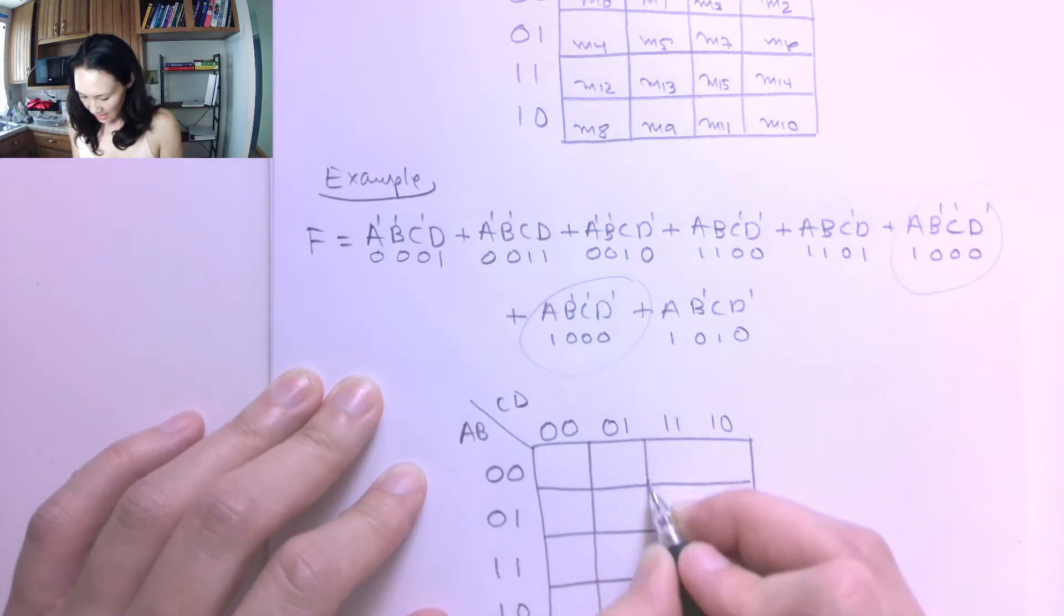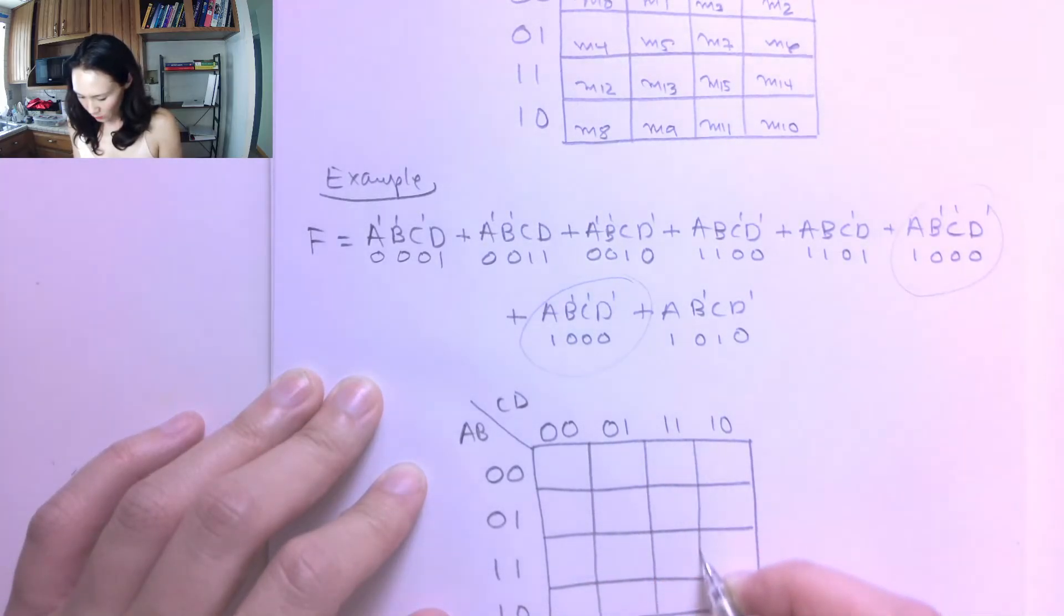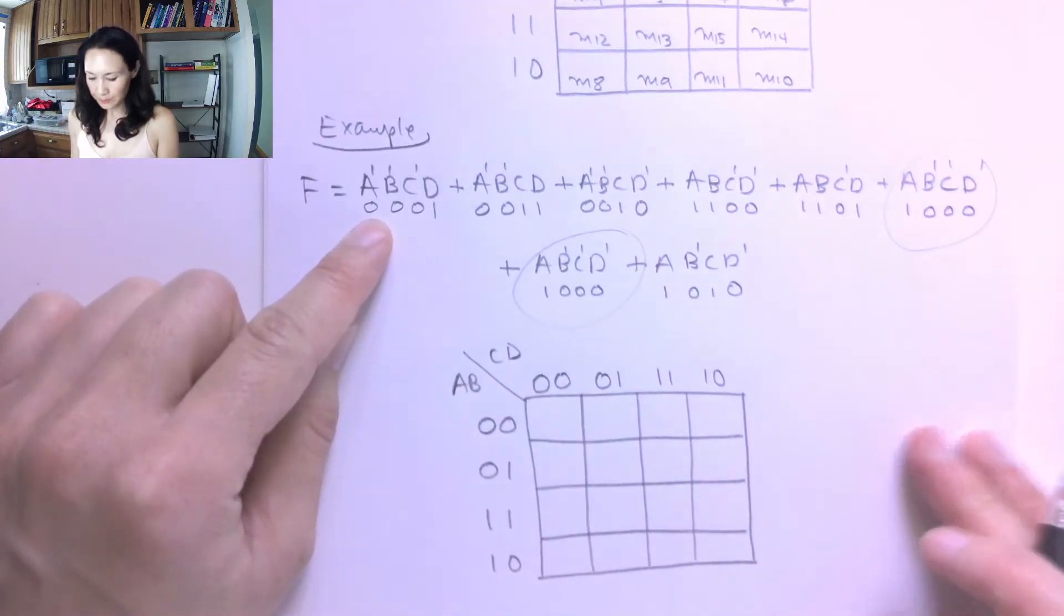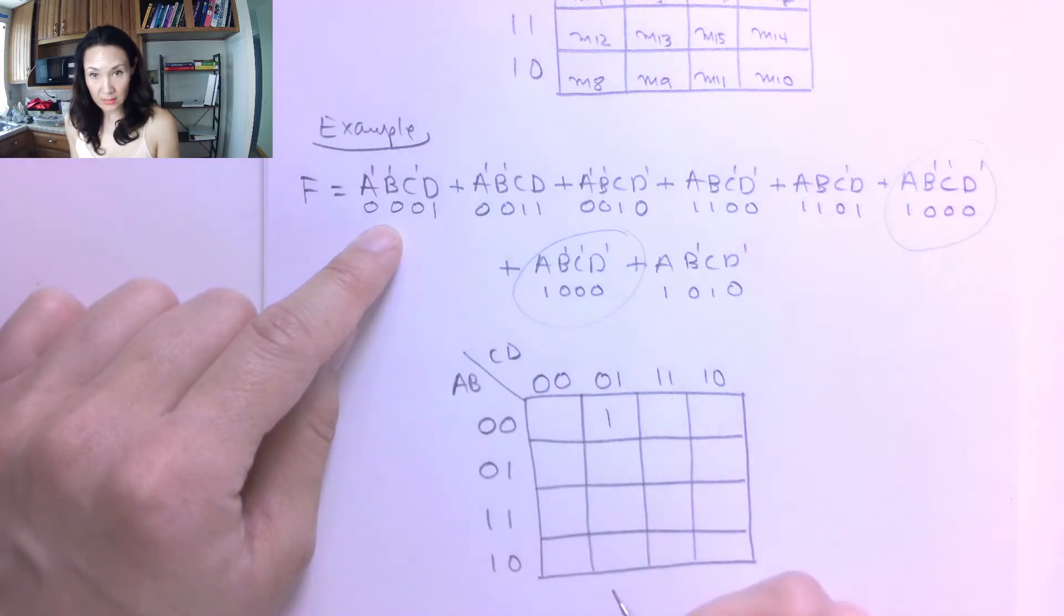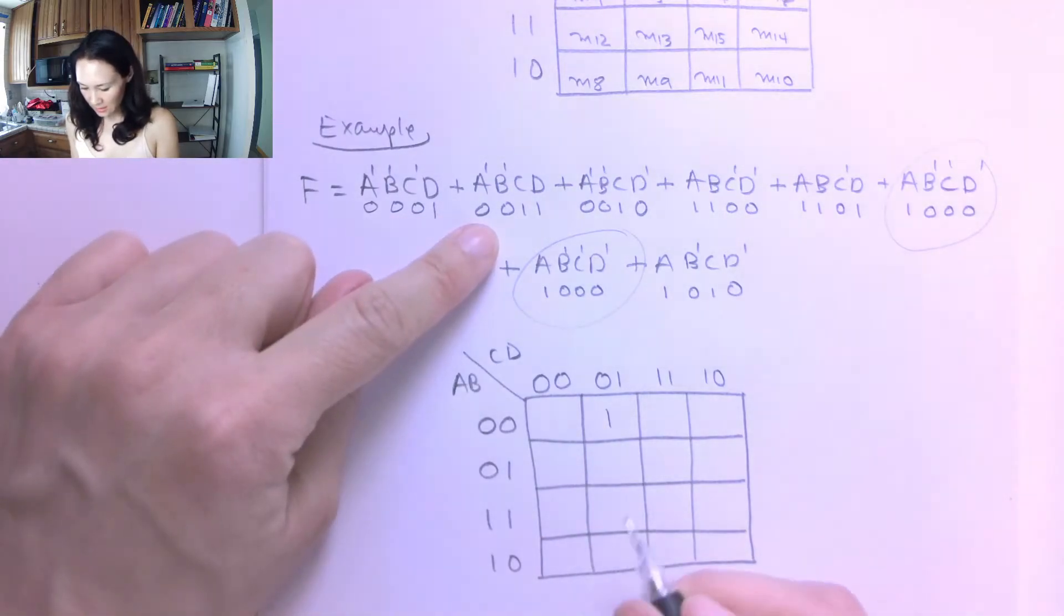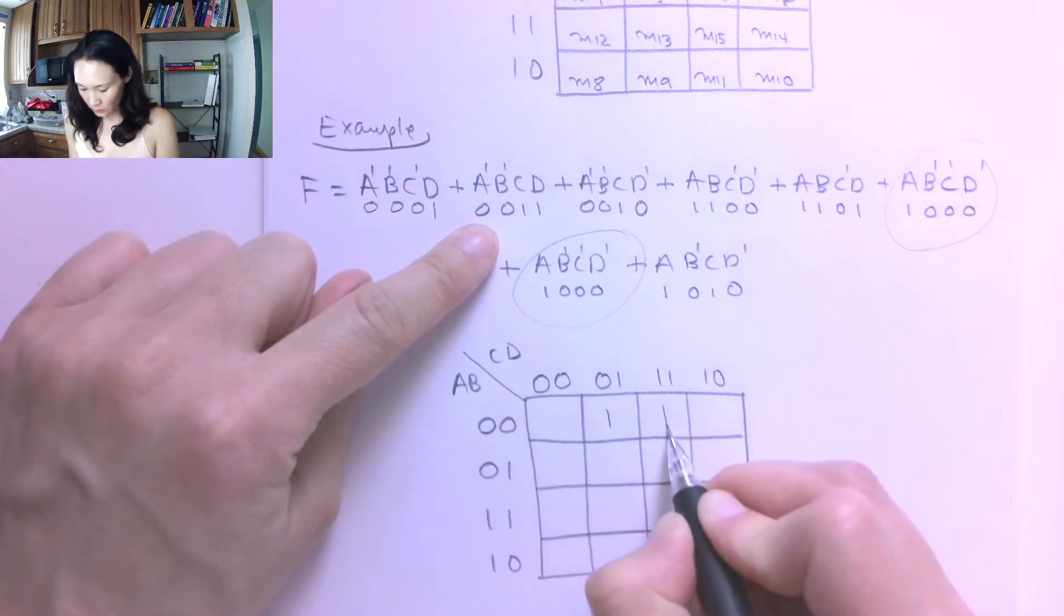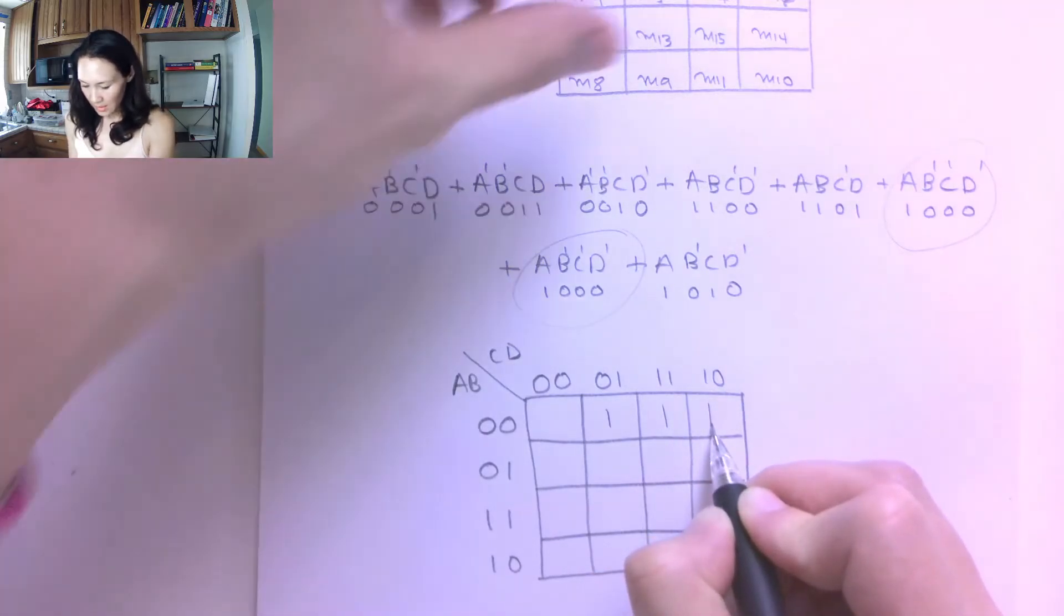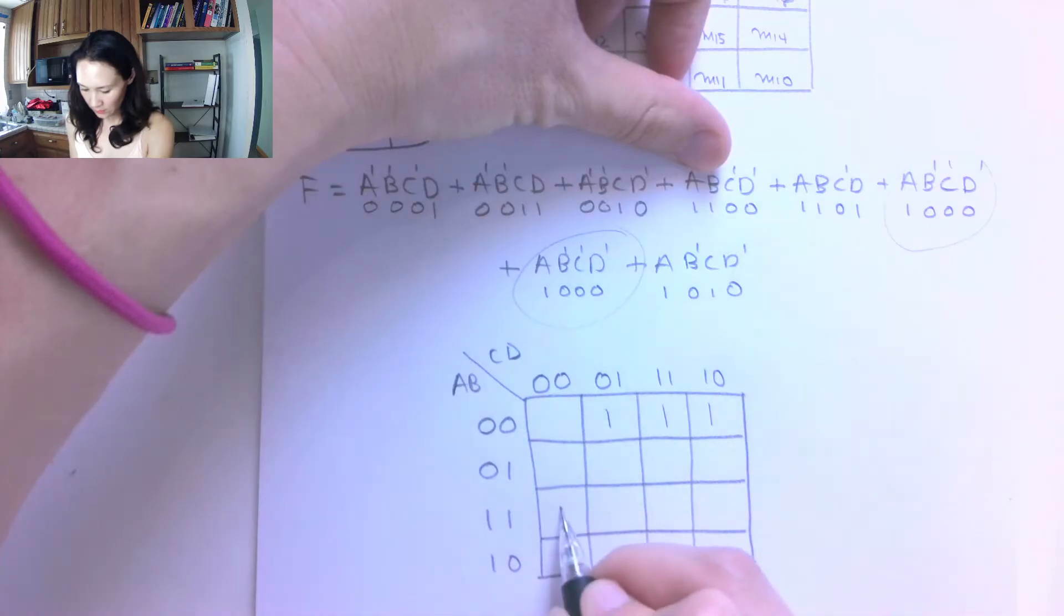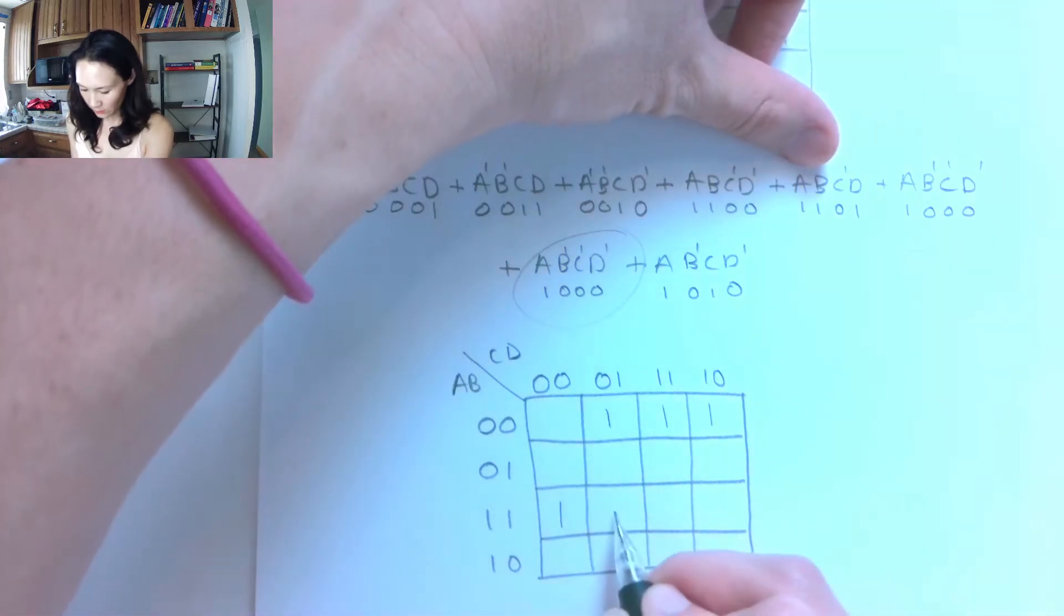So I'm going to have a 1 wherever I have this input combination. So 0, 0, 0, 1 is here. I have a 1 at 0, 0, 0, 1. And then at 0, 0, 1, 1, there's a 1 there. At 0, 0, 1, 0, there's a 1 there. And at 1, 1, 0, 0, there's a 1 there. 1, 1, 0, 1 has a 1.